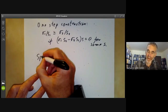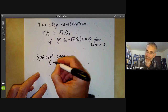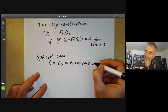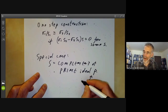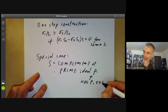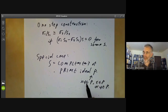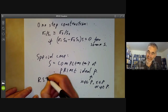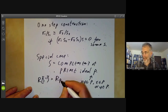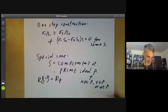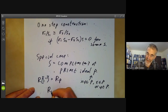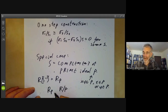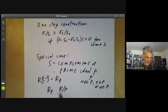An important special case is when S is the complement of a prime ideal P. A prime ideal has the property that if xy is in P, then x is in P or y is in P — this just means the complement of P is multiplicative. In this case, the localization R[S⁻¹] is often denoted R_P. It's easy to confuse R_P with the quotient R/P — in fact these are completely different operations, almost complementary.